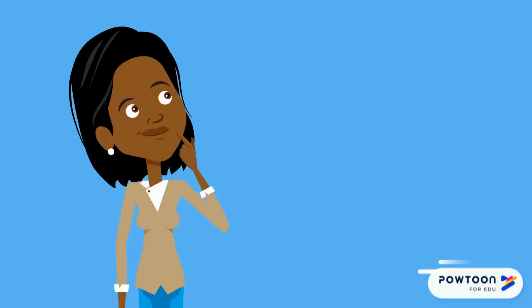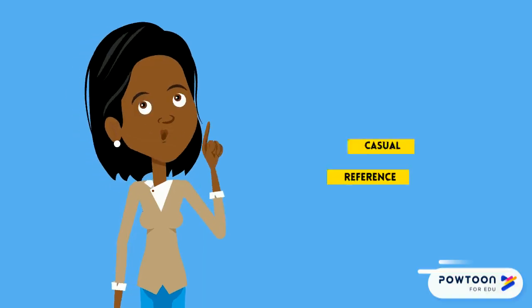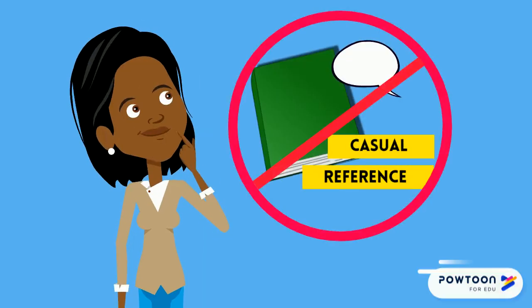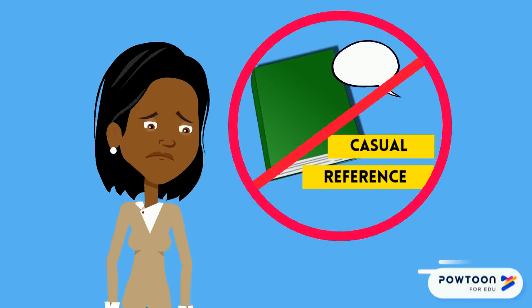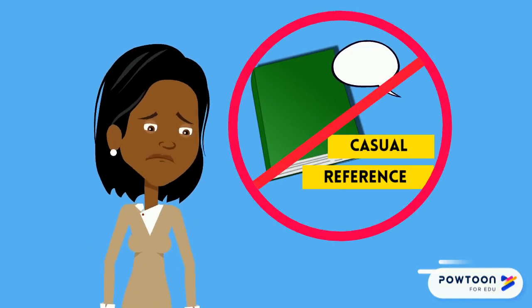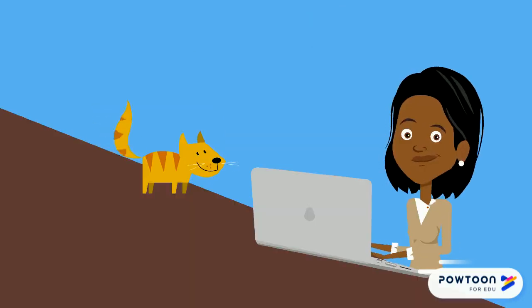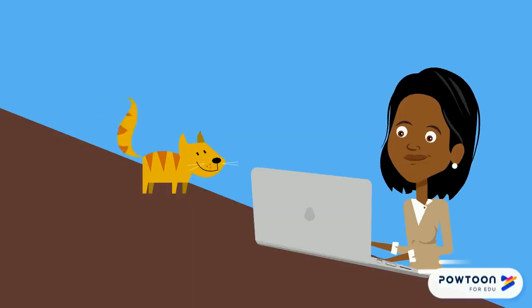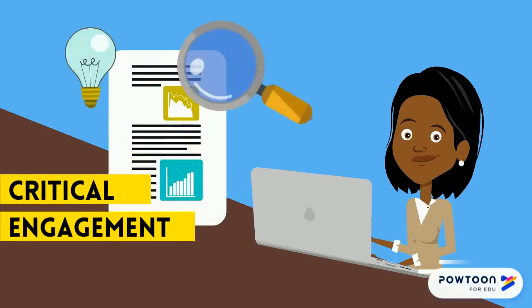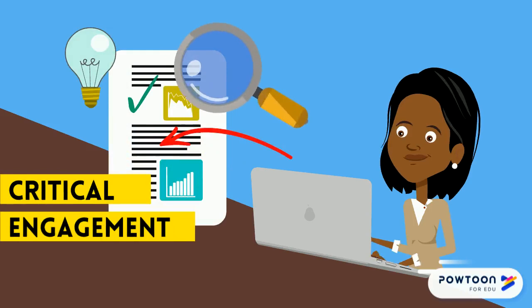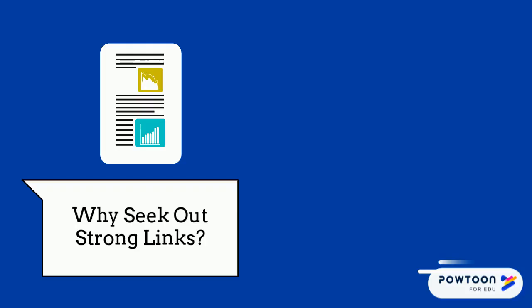So it might be in your best interest to build stronger chains by basing each linkage on something more than just a casual reference. Similarly, whether you're doing a dedicated assignment or just chaining citations as you explore the literature, seeking out critical engagement citations can be rewarding for at least three reasons.